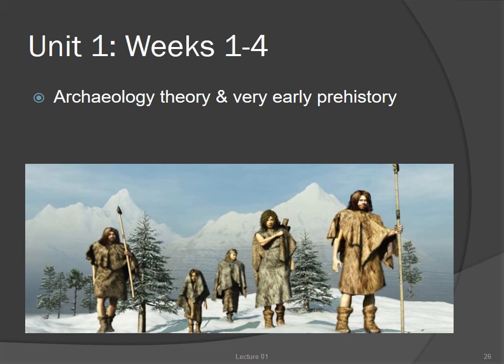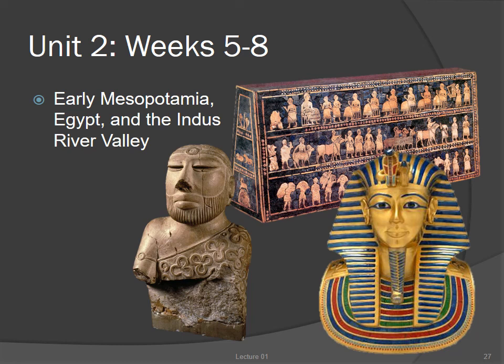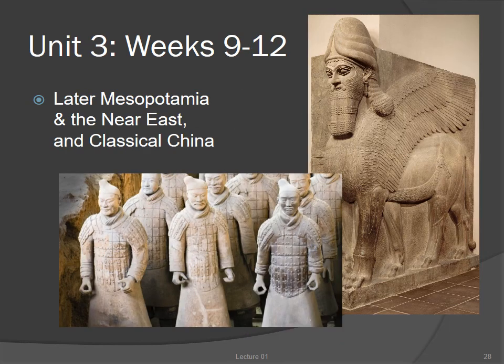Each week we'll examine a different archaeological culture — how it came into being, its relationships with other contemporary cultures, and the influence it had on later periods. In Unit 2, we'll begin with the very earliest civilizations in the Old World: Mesopotamia, Egypt, and the Indus River Valley. These civilizations, along with early China — which unfortunately we won't have time to examine this semester — form the cradles of civilization and serve as the beginning point of all later civilizations, including our own. In Unit 3, we'll shift to a somewhat later time period, looking at how civilizations in Southwestern and East Asia flourished, spending more time on Mesopotamia, the Near East, and classical China.